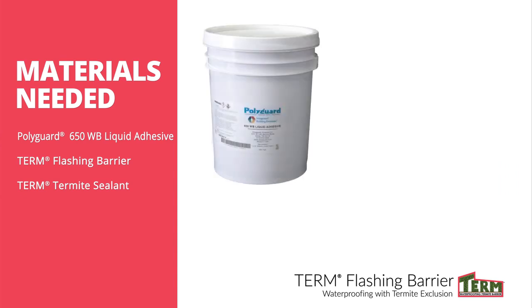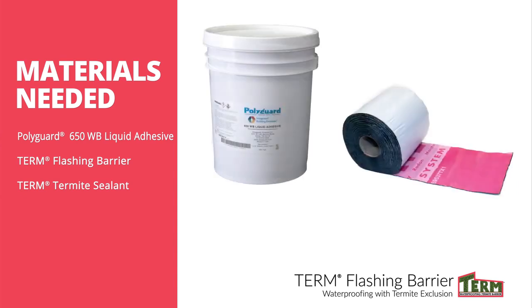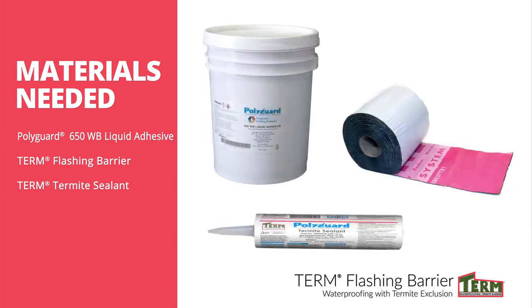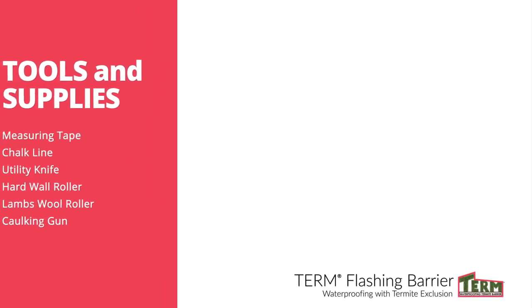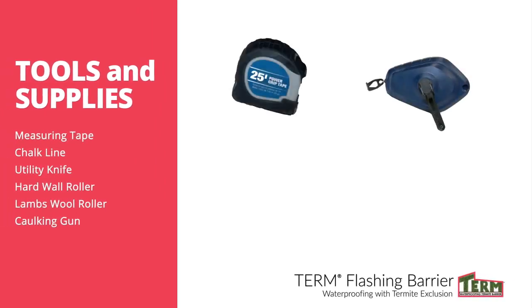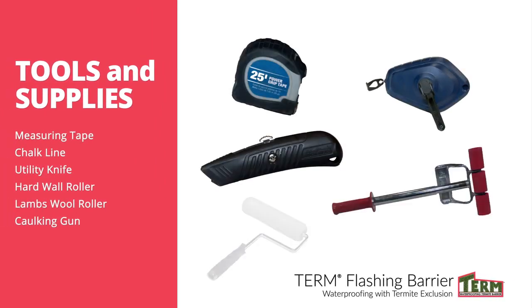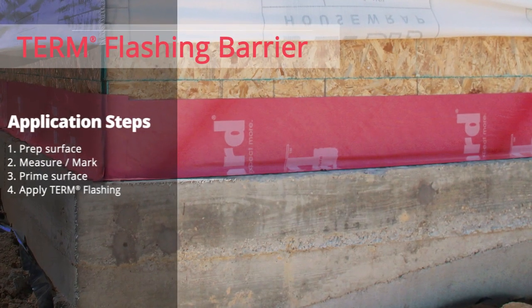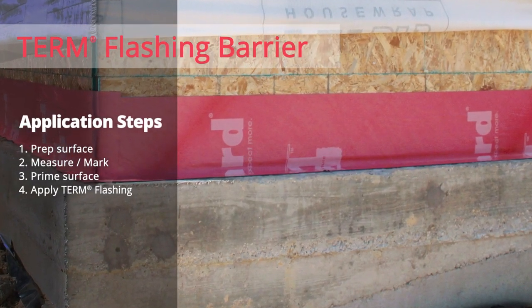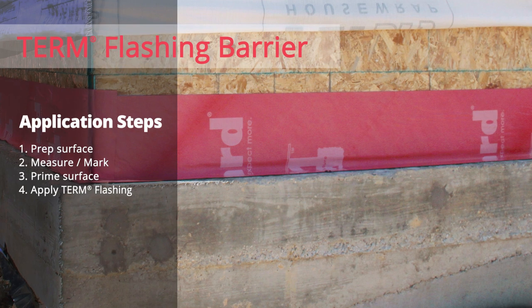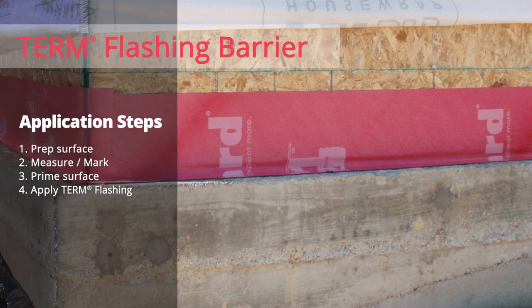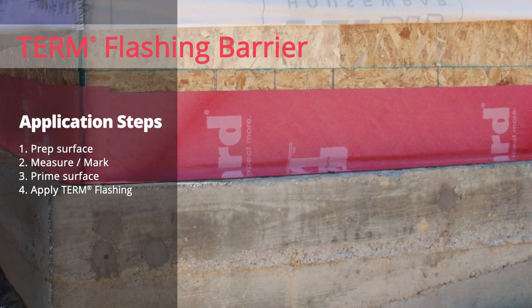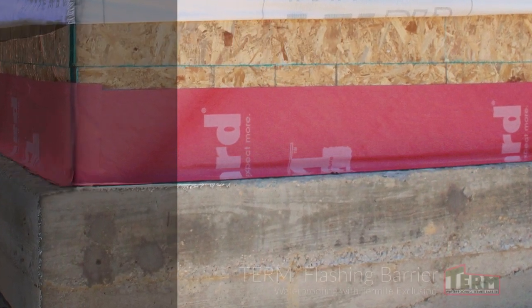Here is a list of the materials you will need, along with the tools and supplies needed. Here is an overview of the installation steps: prep the surface, mark where the barrier should be placed, prime the surface, install the barrier, and finally apply sealant to any gaps and voids.